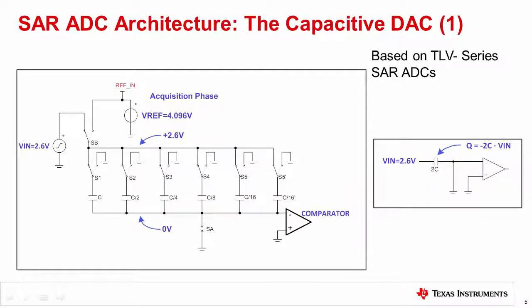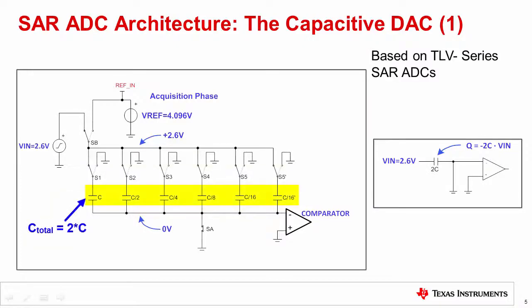Here we show the internal circuit of the CDAC. The CDAC consists of an array of binary weighted capacitors with values plus one additional LSB capacitor. This example shows a 5-bit SAR ADC converter. All capacitors have binary weighted values: C, C/2, C/4, down to the least significant weight of C/16. The last two capacitors having the value of C/16 are connected so that the total parallel capacitance of the capacitor array is 2C.